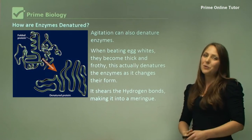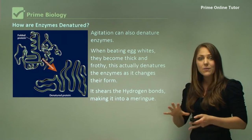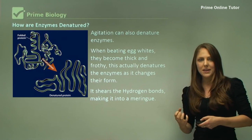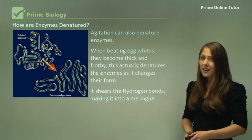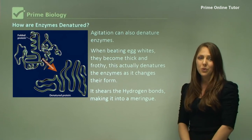Agitation can also denature enzymes. When beating egg whites, if you beat up egg whites or even cream, egg whites become quite thick and creamy. It turns it into a meringue. It changes the functional protein so they're not able to function. Similar with cream.